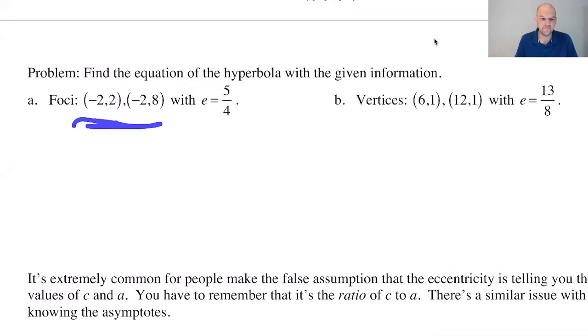So let's see what we're getting. We know that the foci are (-2,2) and (-2,8). And we know that the eccentricity is 5/4. So we know it's a hyperbola because the eccentricity is 5/4. I mean, the problem also tells you that. But if the eccentricity is greater than 1, it has to be a hyperbola.